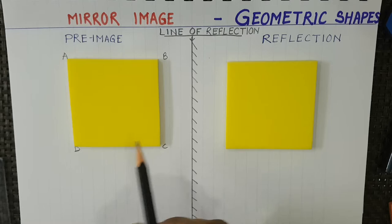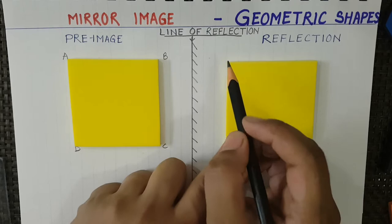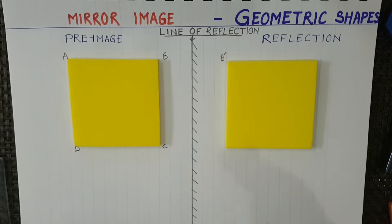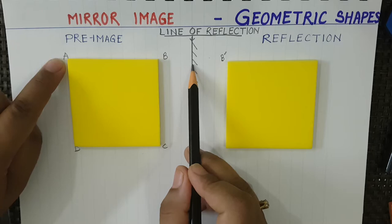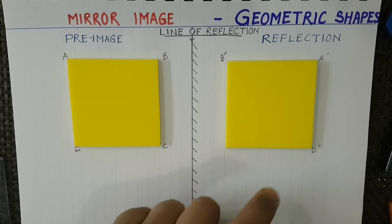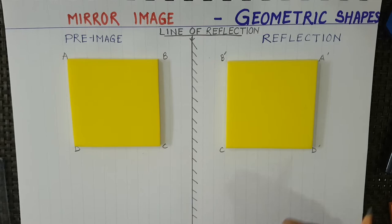All the points should be at the same distance. You can see point B — we label it B with a dash to show it is the reflection. A is very far from the mirror, so A' is also placed equally far on the other side. D is far from the mirror, and C is on the mirror. So this is our mirror image.